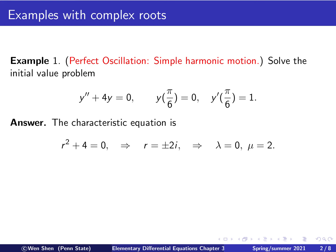The first step is to set up the characteristic equation, which gives us r squared plus 4 equals 0. Moving the 4 to the right-hand side gives negative 4, and therefore we have two roots which are pure imaginary: plus or minus 2i. So the real part lambda is 0, and the imaginary part mu is 2.